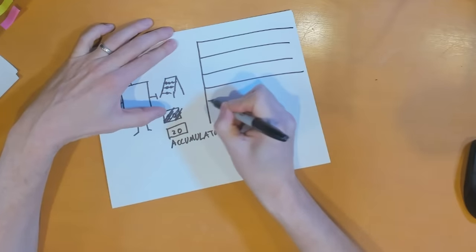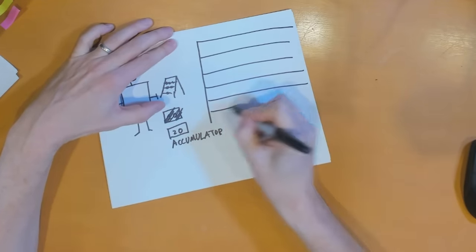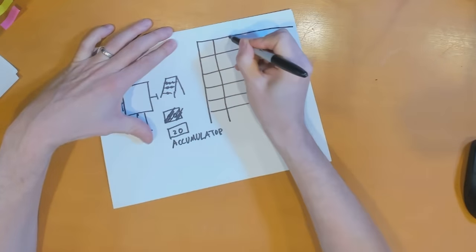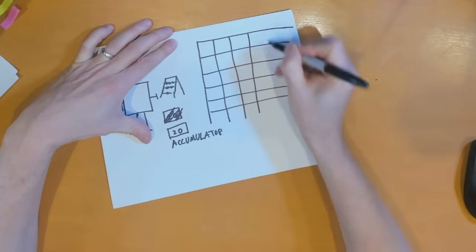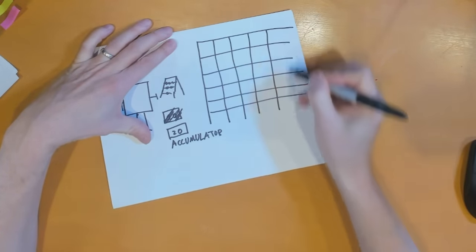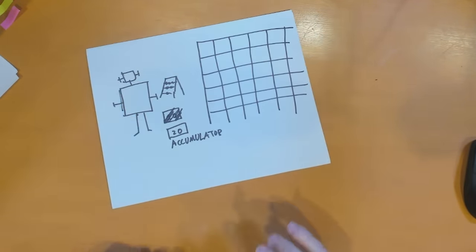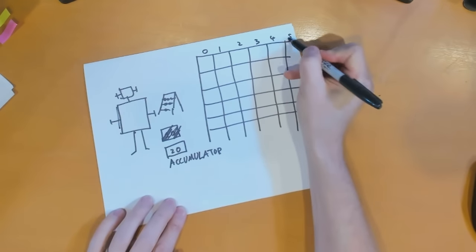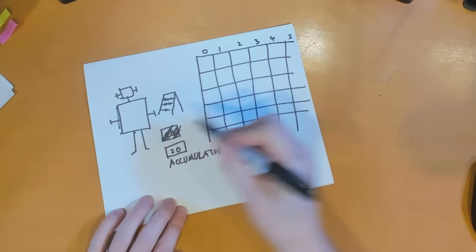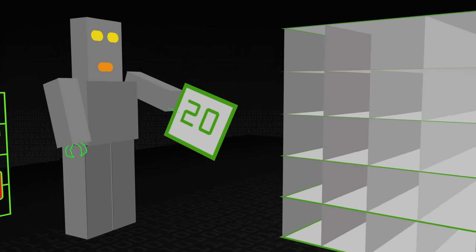The robot can also go to the RAM. The robot in this instance represents the CPU of the computer, and the RAM — the memory of the computer — is represented in my mental model as a set of pigeonholes. It's a huge array of pigeonholes, and each one is labelled: 0, 1, 2, 3, 4, 5, 6, 7, 8, 9, 10 — thousands and thousands of them.